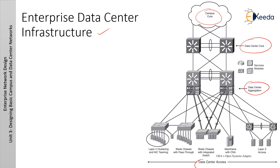The enterprise data center distribution layer is known as the aggregation layer in this particular enterprise data center. In data center infrastructure, it must provide the port density and Layer 2 and Layer 3 connectivity for servers at the access layer, while supporting security services provided by ACLs, firewalls, and intrusion detection systems.